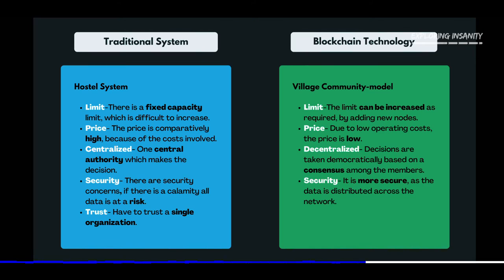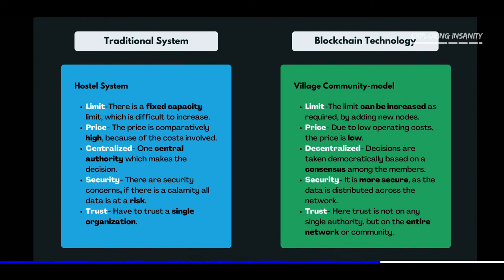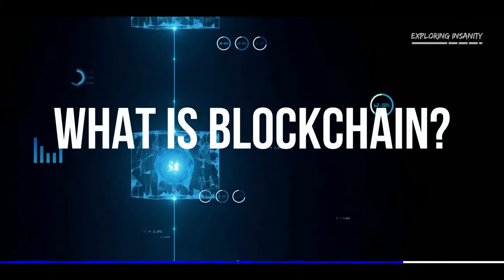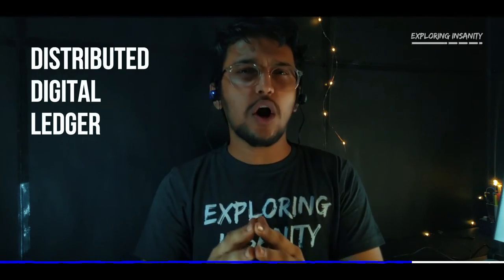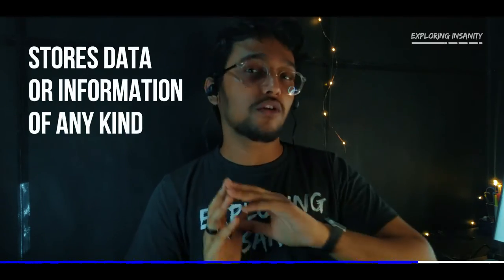Fifth, trust: in the traditional system, you have to trust only a single party or organization. Whereas in blockchain technology, you don't need to trust any single party or organization — your trust is on the entire community or the network itself. So these are the benefits of blockchain technology, and we will learn more about this in further videos. Now, what is blockchain? At its core, blockchain is a distributed digital ledger, or an online record book, that stores data or information of anything.